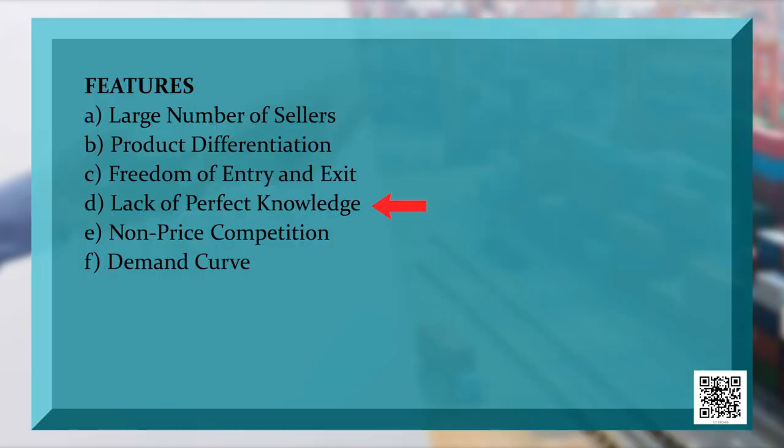The next feature is freedom of entry and exit. Any firm can enter into the market as long as firms continue to earn profit, and can leave the market when it starts incurring loss, because there is no barrier in the market. Another feature is lack of perfect knowledge — as there are so many firms offering similar products, different firms do not have perfect knowledge about their competitors.